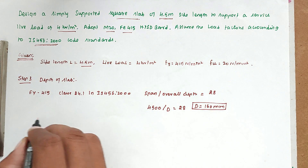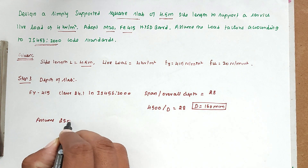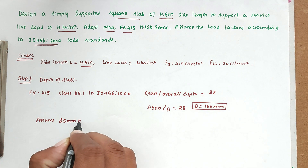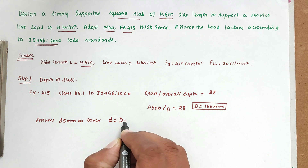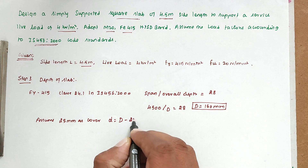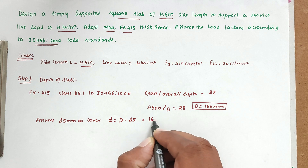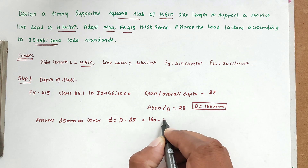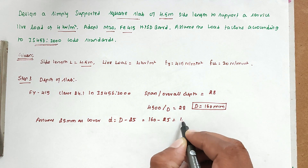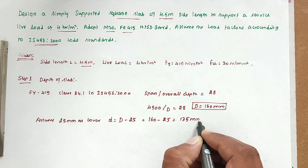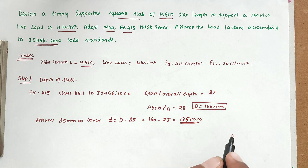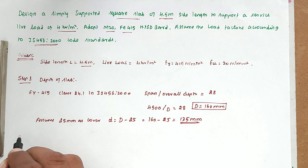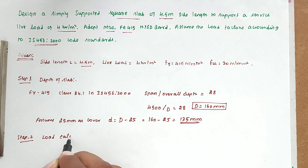Assuming 25 mm cover, effective depth d = D − 25 = 160 − 25 = 135 mm. So the effective depth of the slab is 135 mm. Next is Step 2: Load calculation.